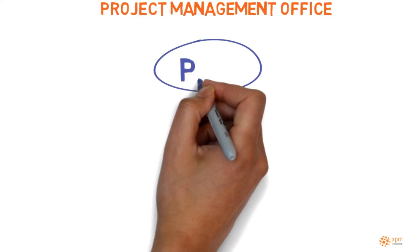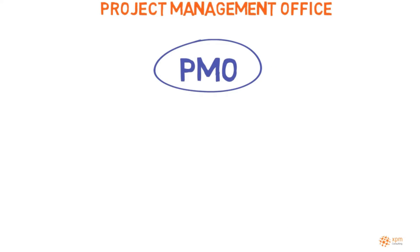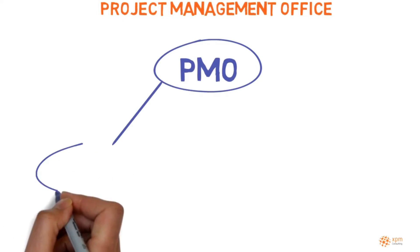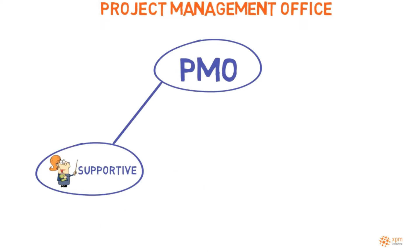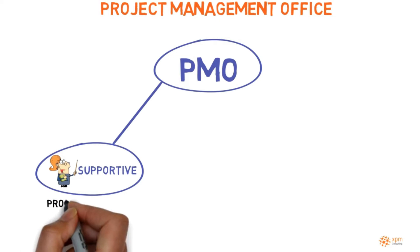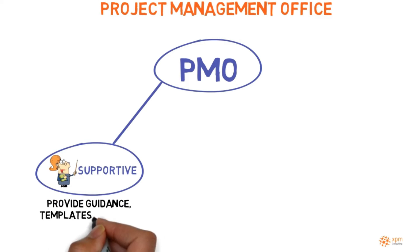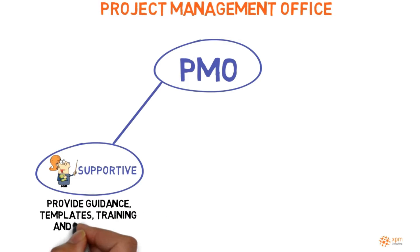There are different PMOs according to their level of project control and organizational influence. A supportive PMO with a consultative and support role. Its responsibilities may include providing guidance, helping solve and escalate problems, providing templates, organizing project management training, and maintaining projects' historical information.